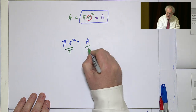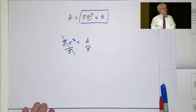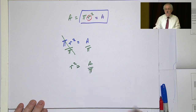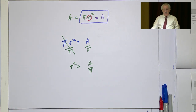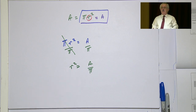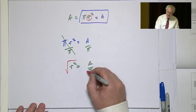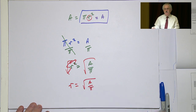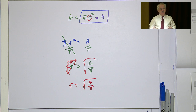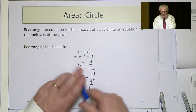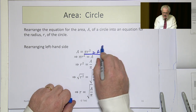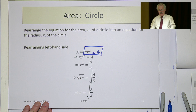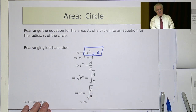We now have πr² = A. The π is a multiplication, so we divide by π, giving r² = A/π. Now how do we get from r² to just r? The twin of squaring is square rooting. So r = √(A/π). That's our formula. The steps are: write πr² = A, divide by π to get r² = A/π, then take the square root. We don't need a plus or minus before the square root in this context.